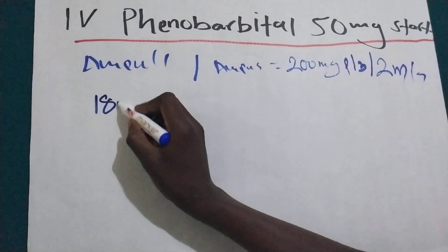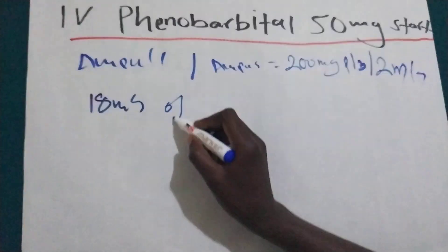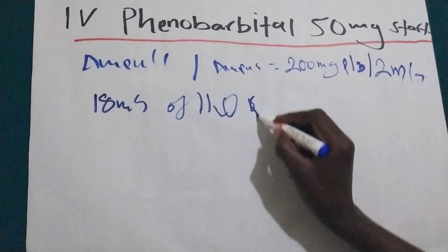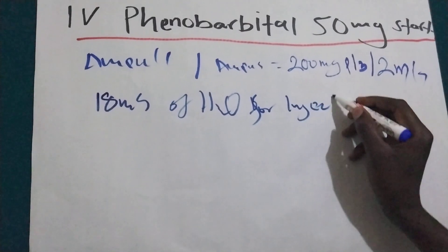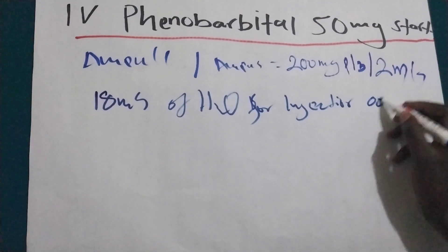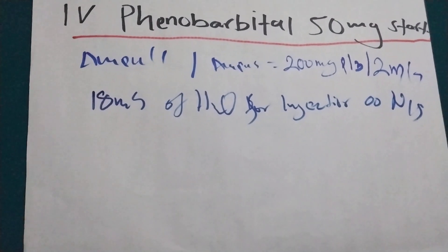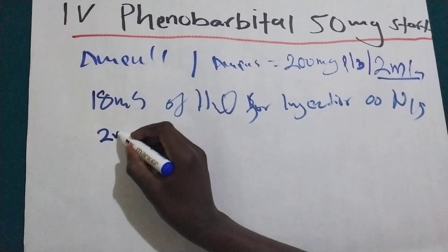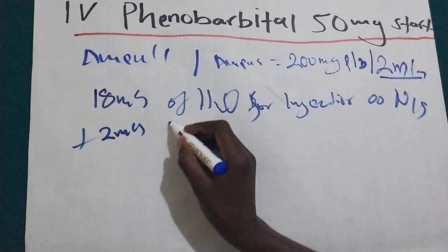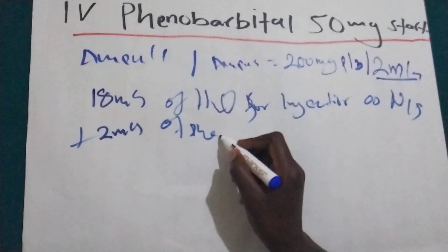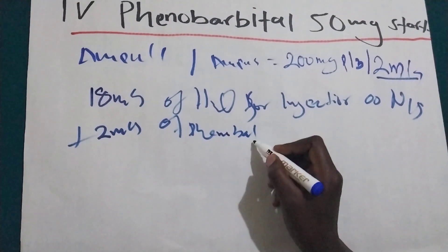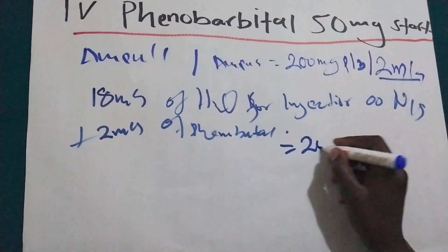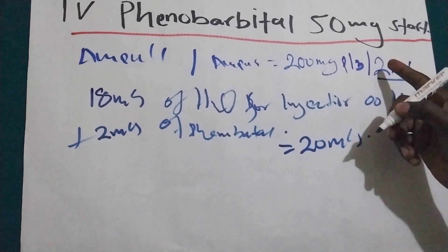We are going to use 18 mls of water for injection or normal saline. And then we are going to add these two mls of phenobarbital. So our total volume will become 20 mls in this case.